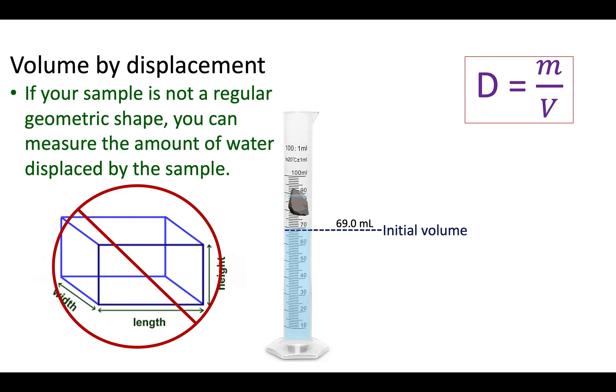Then you would drop the object in the water. The water level would go up, and you get a final volume. You read it off the graduated cylinder. The volume of the water went up by the volume of the object.